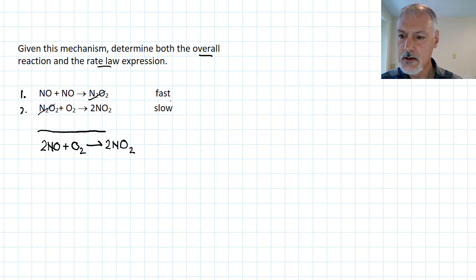Now, the slowest step would give me my rate. So I would first go, the rate then would be some constant times the concentration of N2O2. I have one of those colliding with oxygen.